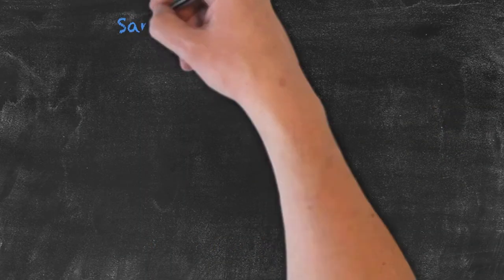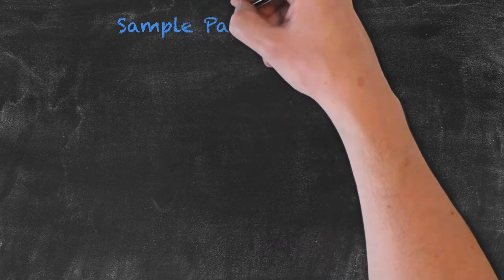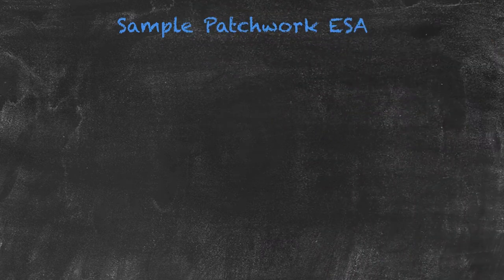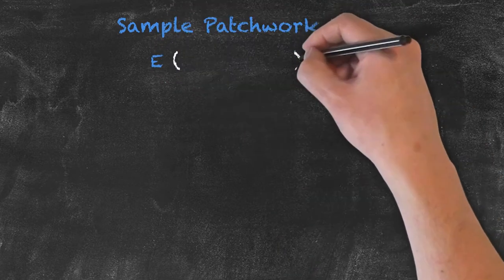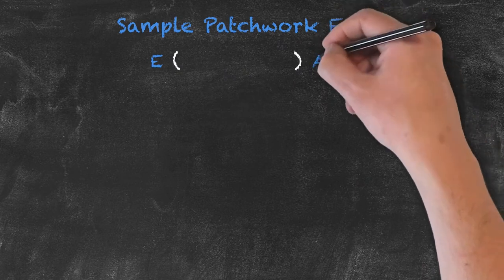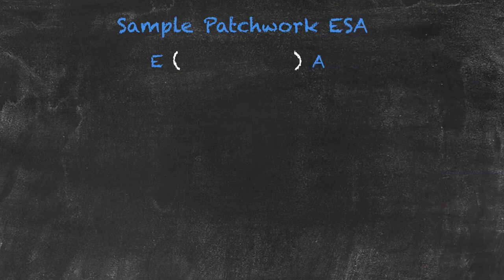Our final example is going to be an example of a patchwork ESA lesson. Remember, we said the form of this particular lesson will start with an engage, as always finish with an activate, and there'll be some variation of E, S, and A within the brackets. So we're going to generate our patchwork ESA lesson as follows.